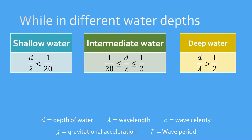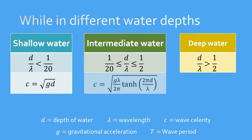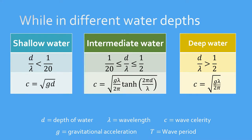For shallow water, wave celerity is determined by the water depth. For intermediate water, we will have to use the full general equation. And for deep water, the wave celerity depends only on the wavelength.